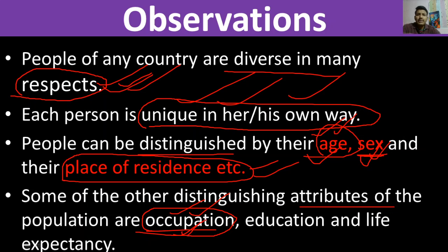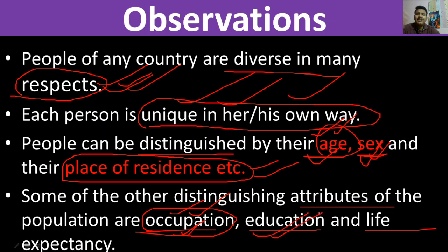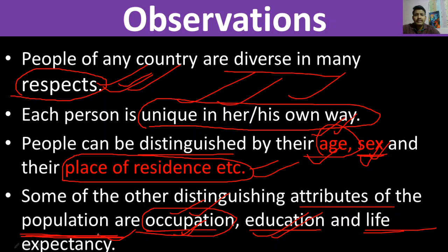Occupation is one distinguishing attribute — people can work as doctors, engineers, teachers, or agricultural workers. Education is another attribute — people can be literate or illiterate. Life expectancy is also a criterion — how long people are living. These are criteria by which we can categorize groups of persons.